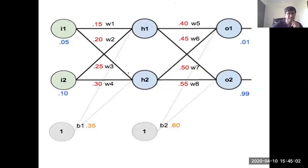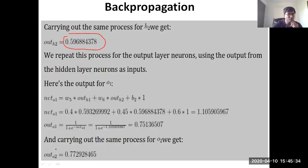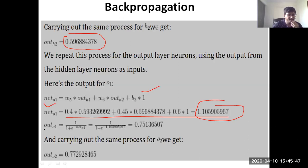Now we need to calculate the output for o1 and o2. The outputs of h1 and h2 become the inputs for o1 and o2. For the net input of o1, the formula is h1·w5 + h2·w6 plus the bias weight 0.6. Solving this gives a net input of 1.1, and applying the sigmoid activation gives output o1 = 0.75. Similarly, output o2 comes out to be 0.77.